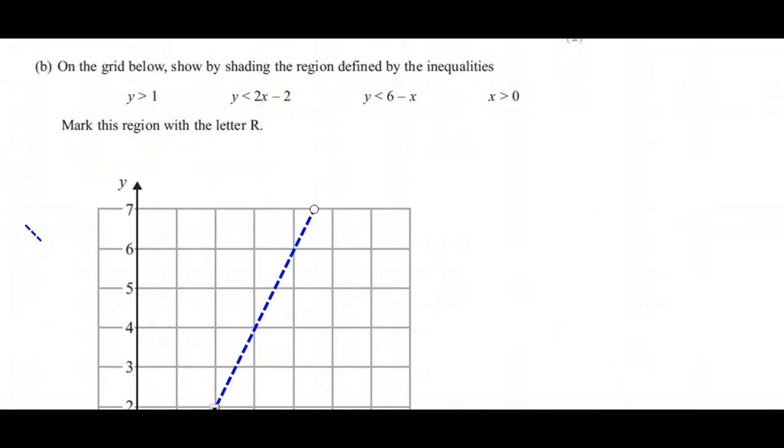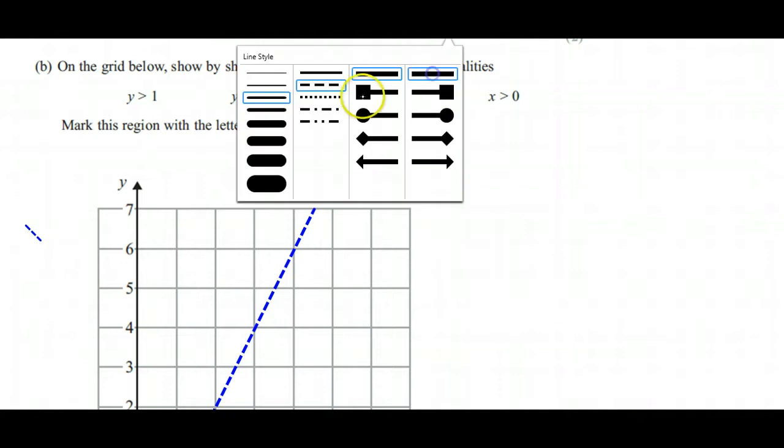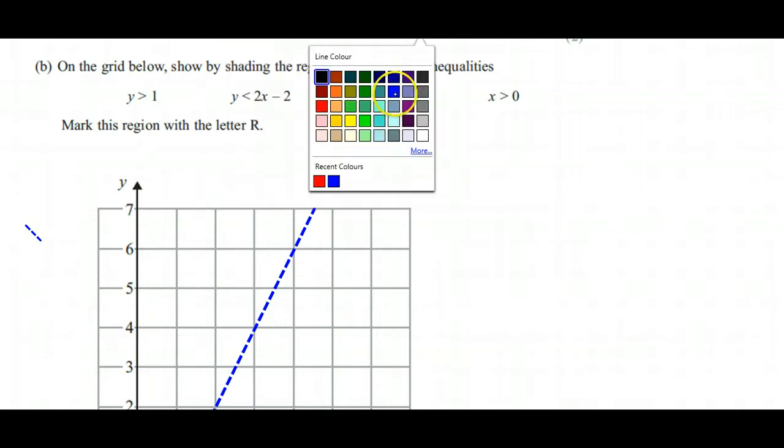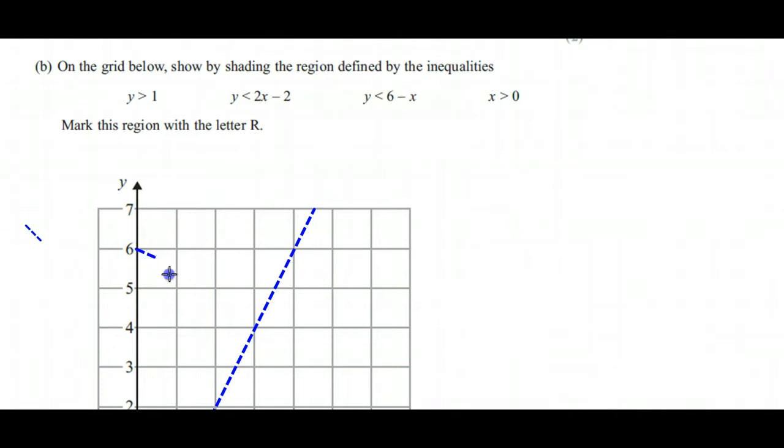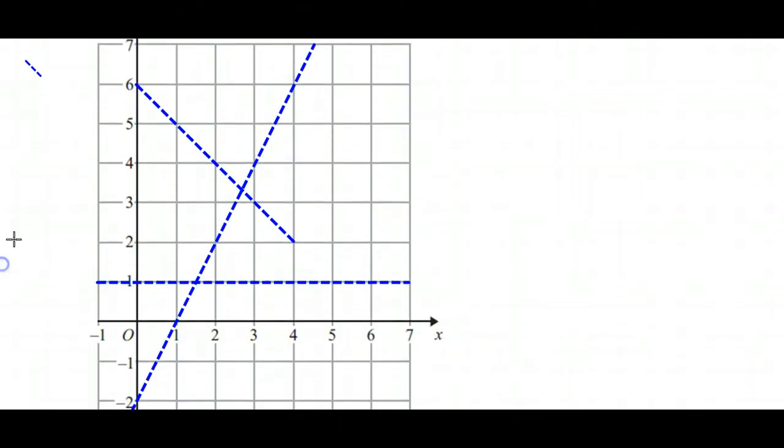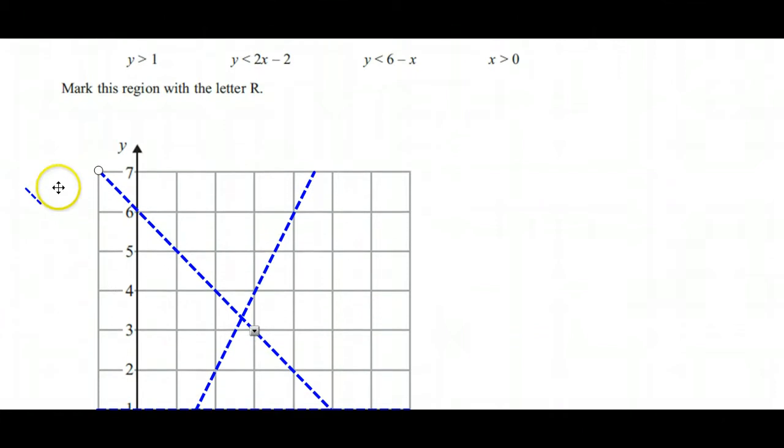Moving on to the next one, y is less than 6 - x. That means it goes through 6 on the y-axis, and then because it's minus x, it goes one across, one down, one across, one down, and so on. It's got a negative gradient. So there's the line that represents y < 6 - x.